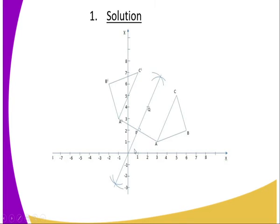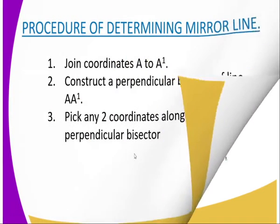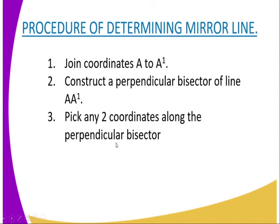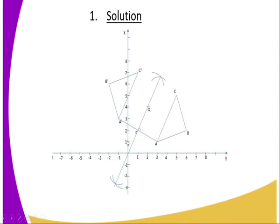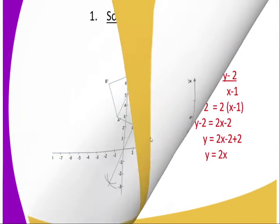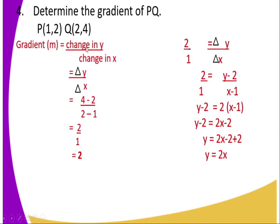Next, pick any two coordinates along the perpendicular bisector. In this case I have picked P and Q, where P has coordinates (1, 2) and Q has coordinates (2, 4). Using these two coordinates, determine the gradient of PQ. The gradient is change in y over change in x: (4 − 2) divided by (2 − 1), giving 2 over 1, which equals 2.